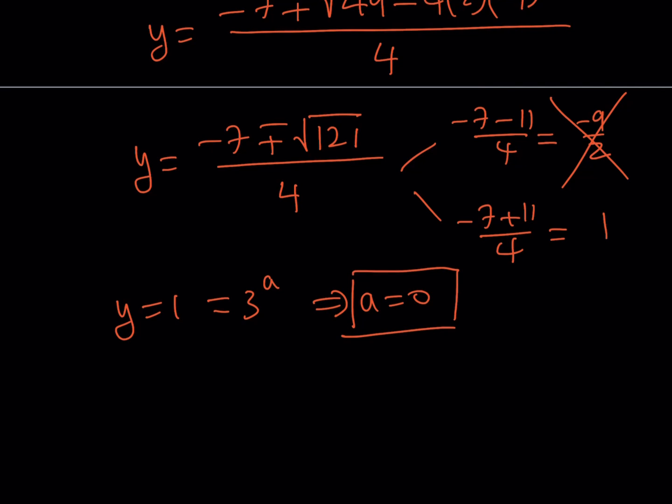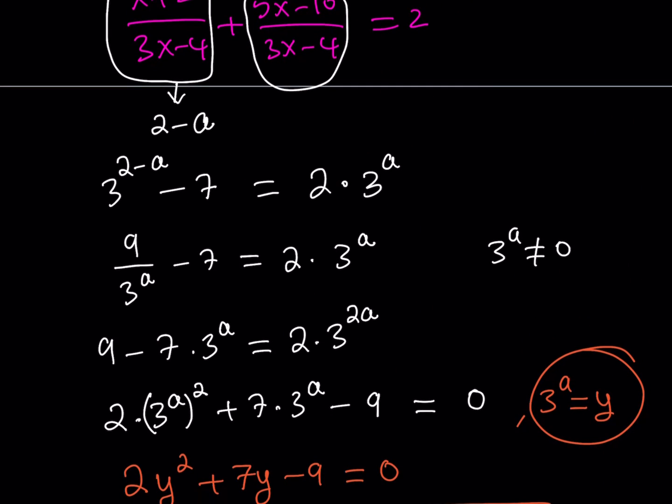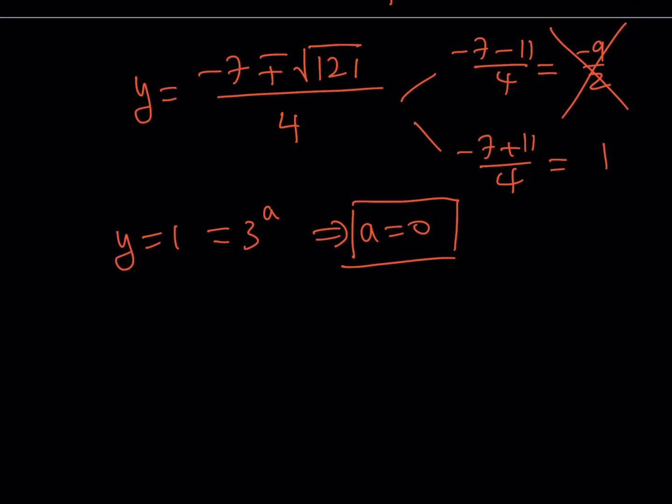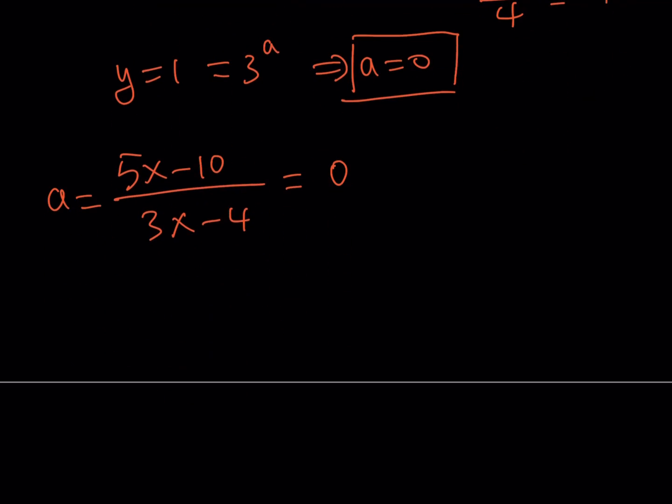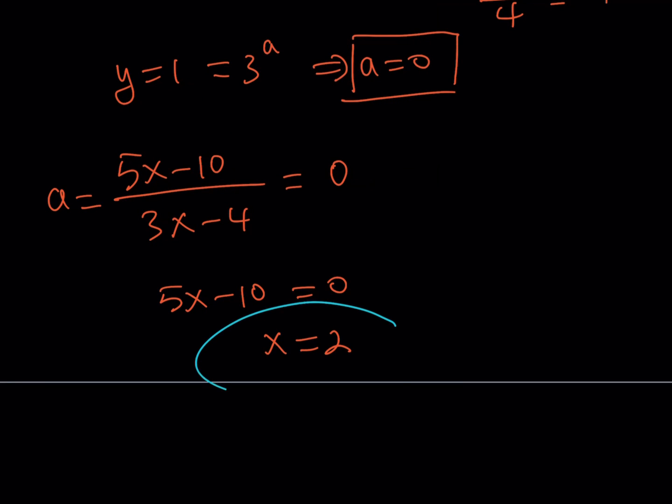From here, we get a equals 0 because 3 to the power 0 is 1. But, that's not the answer because we're looking for what? We're looking for x. And, what did we call a? 5x minus 10 divided by 3x minus 4. 5x minus 10 divided by 3x minus 4 is equal to a. And, we know that a is equal to 0. Which means, 5x minus 10 is equal to 0, obviously, because denominator cannot be 0. But, the numerator must be 0. And, x equals 2 is going to be the only solution to this problem.